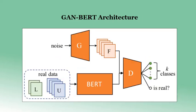Let's take a look at the suggested model architecture for this approach. This is essentially a semi-supervised GAN architecture where the labeled or unlabeled textual examples are represented by the BERT model, and the generator is used to generate fake examples while a discriminator is expected to classify the data.